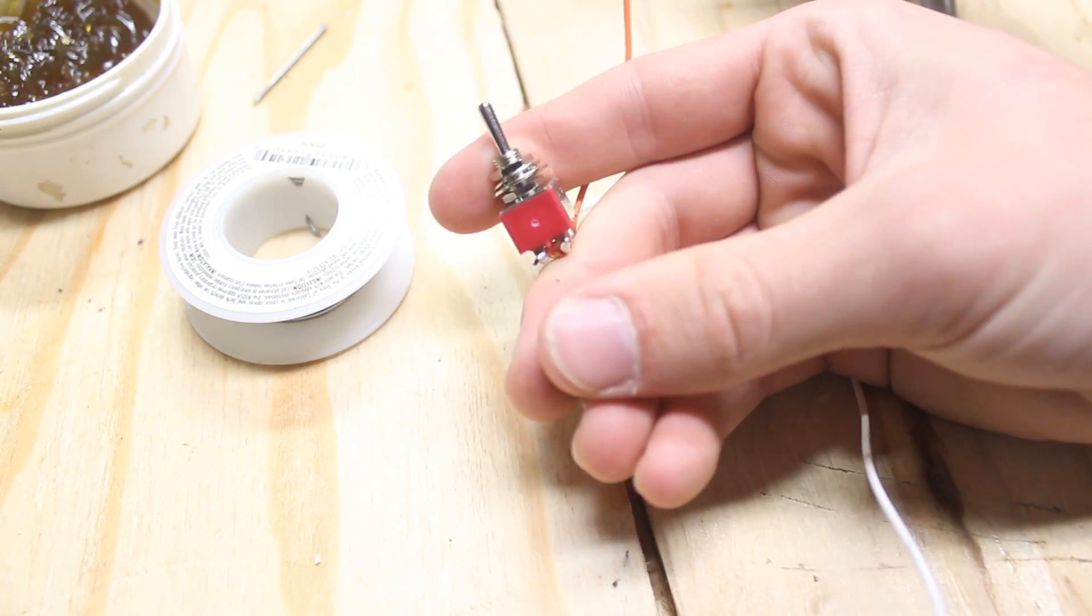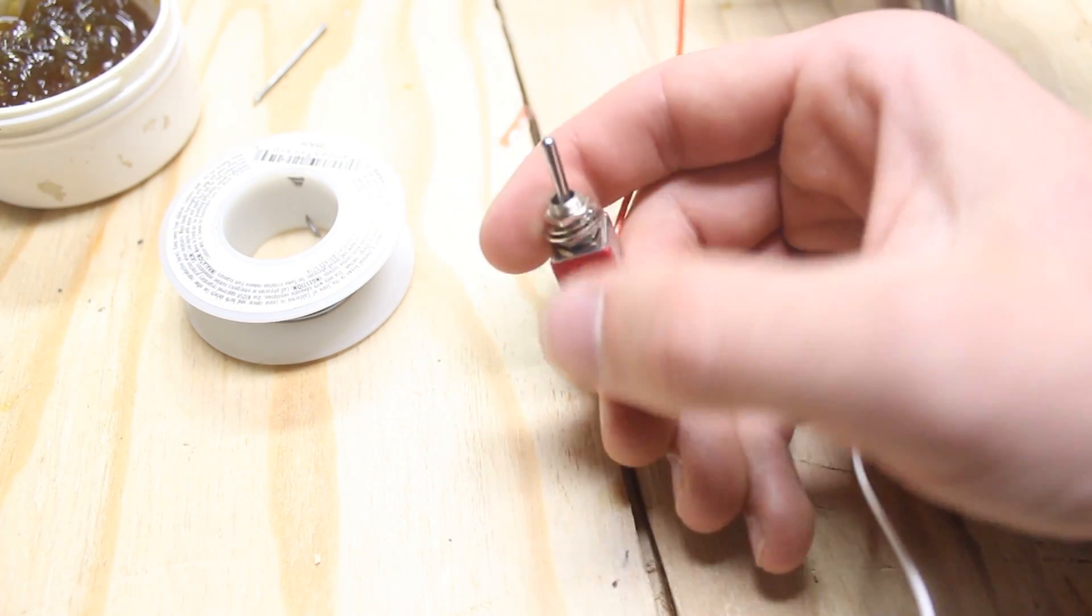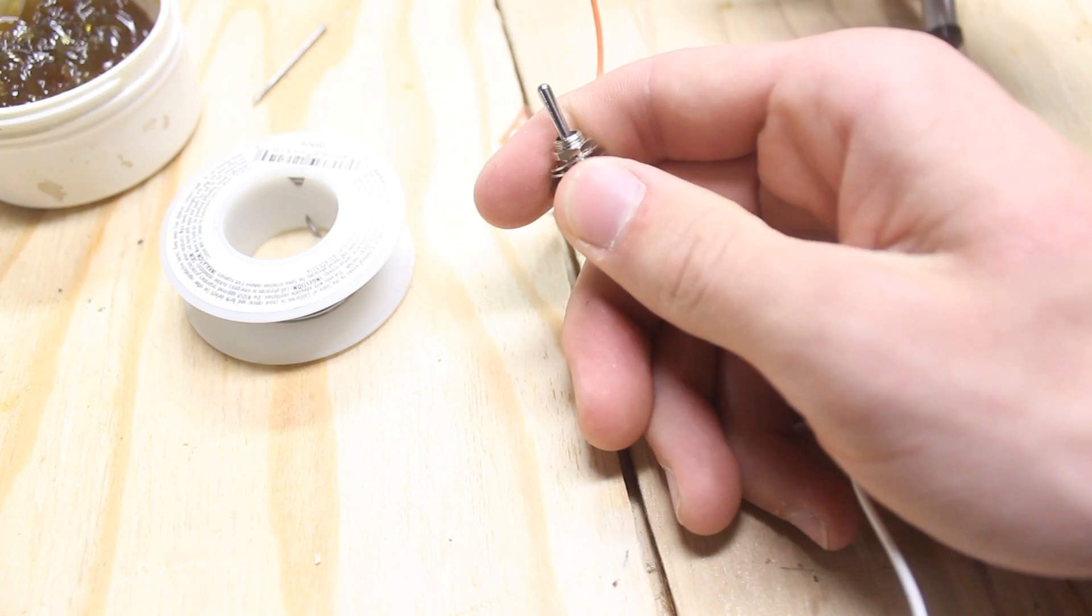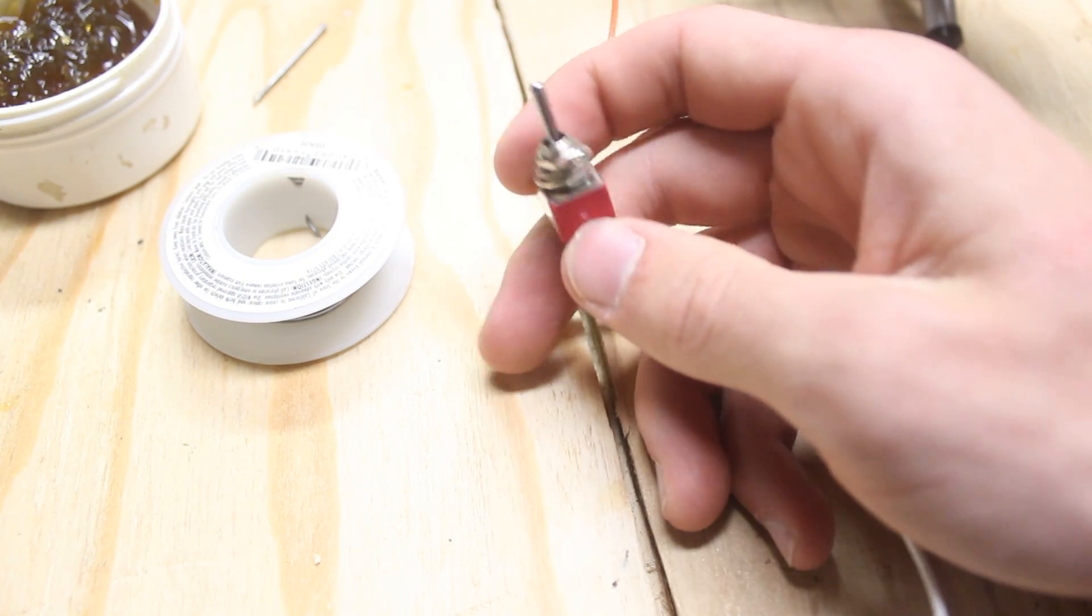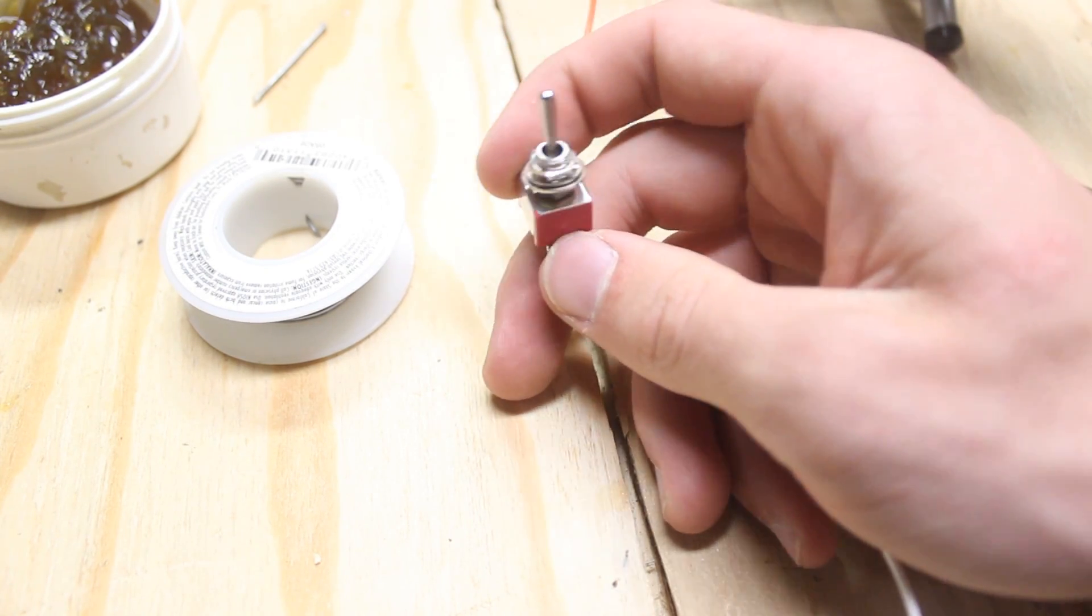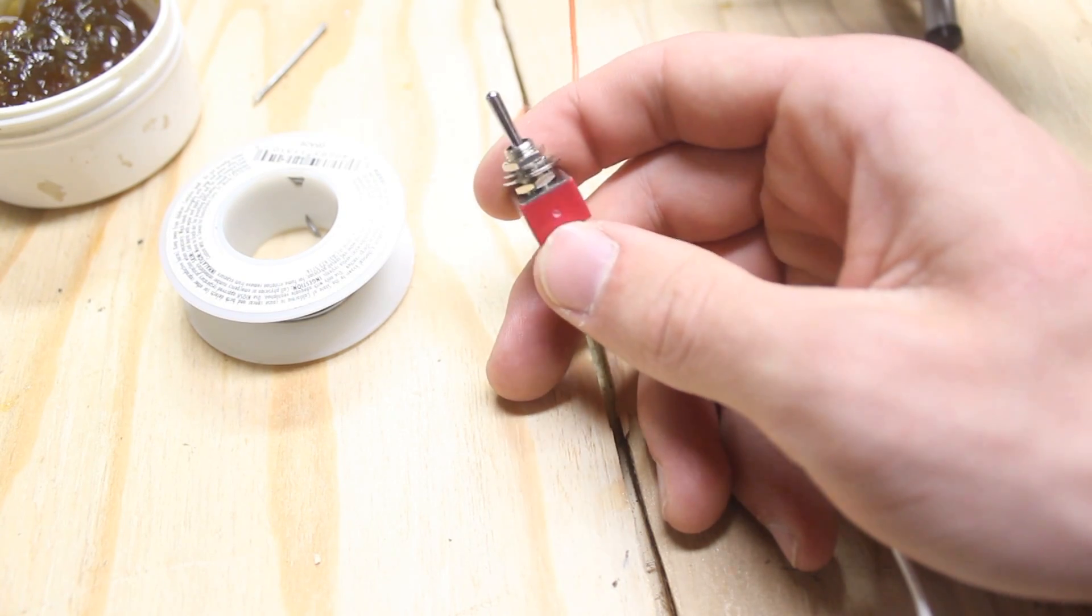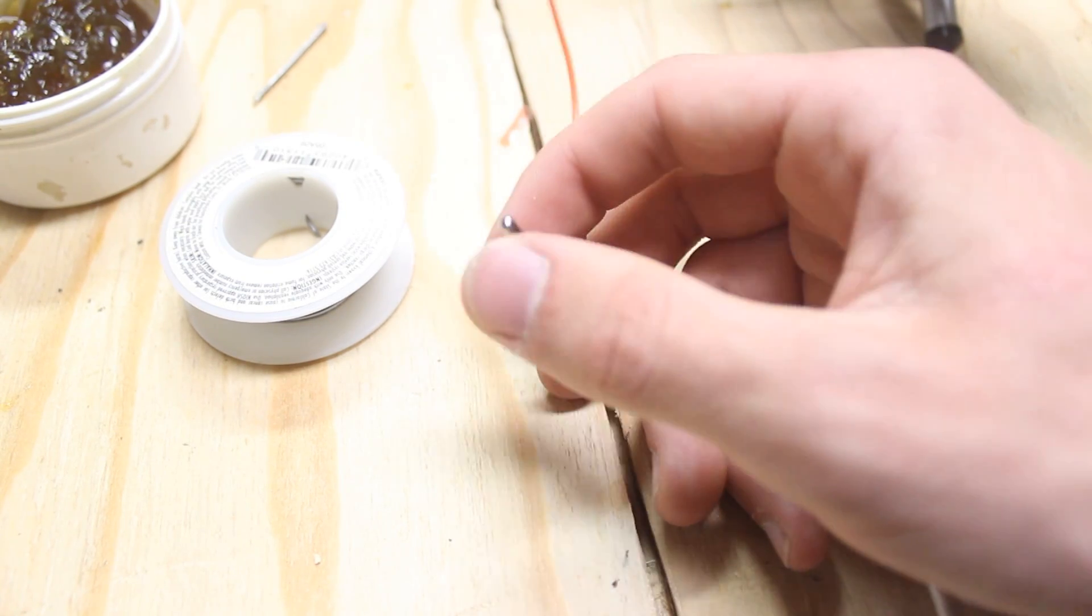So the next part will be how to install the tortoise switch machine. And then I believe the third part will be how to wire these all together. So if you have any suggestions, let me know and look out for the next part. I hope you enjoyed.